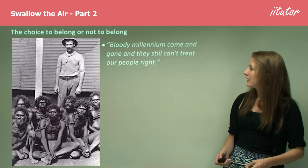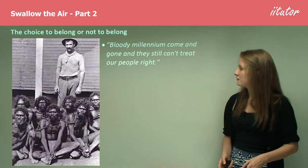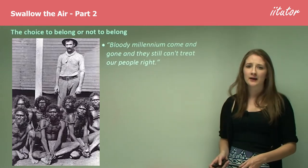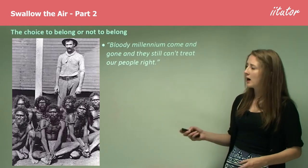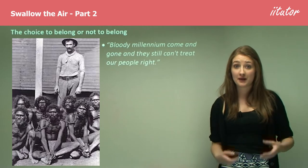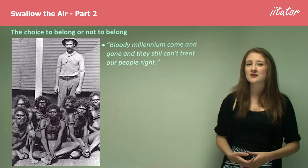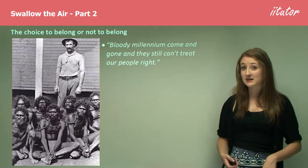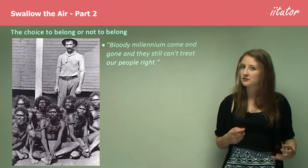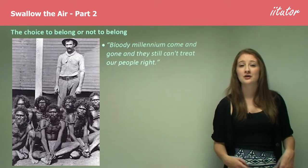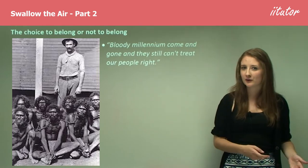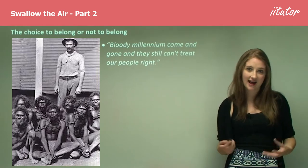The quote: 'Bloody millennium come and gone and they still can't treat our people right.' Here you have the very colloquial language — 'bloody,' and 'come and gone' with its incorrect grammar — capturing the dialect of an Aboriginal person talking. This conveys the idea that Aboriginal people have been very oppressed and, because they've been mistreated and outcast, don't really belong to the society they should belong to, because it is their own country and their own land.